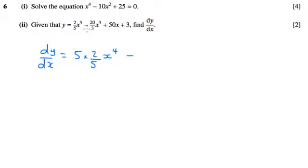Same thing here. 3 comes to the front, take one off the power. 50x, when we differentiate just an x to the power of 1, we just get the coefficient. Because the 1 turns into an x to the power of 0, and x to the power of 0 is 1. So we've just got 50 there.